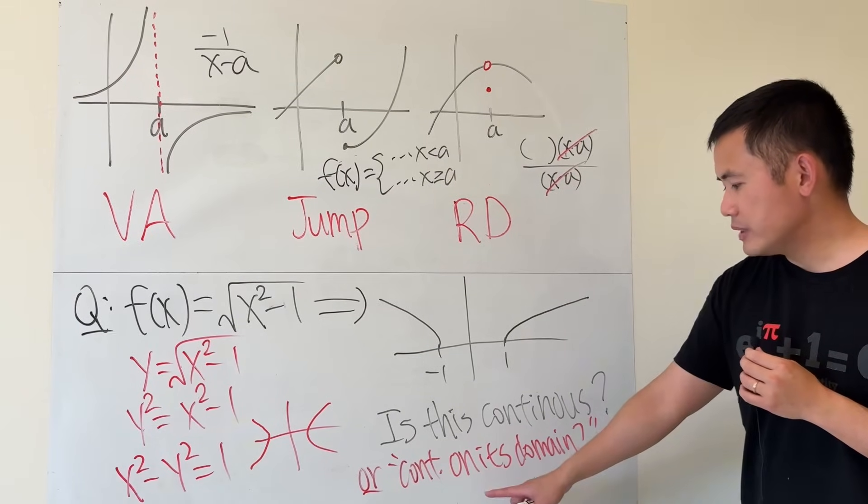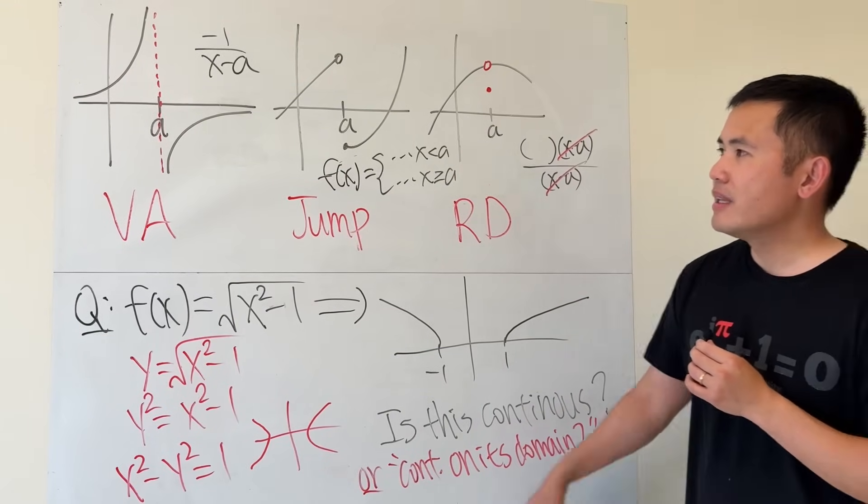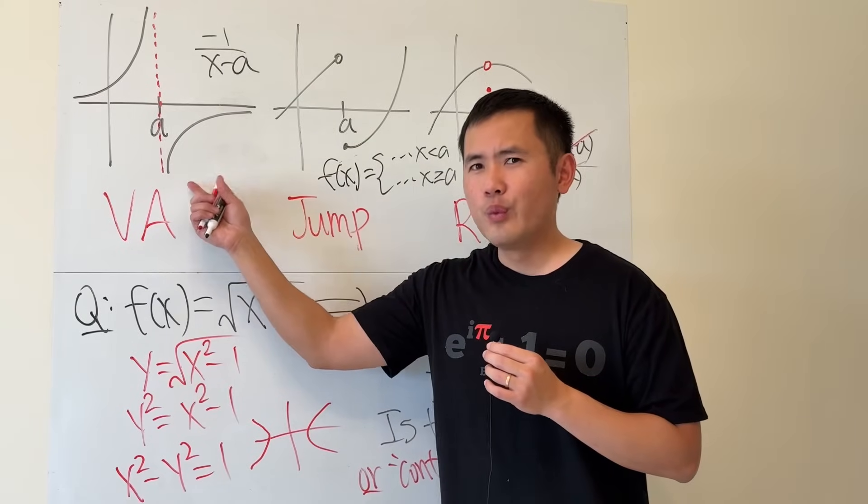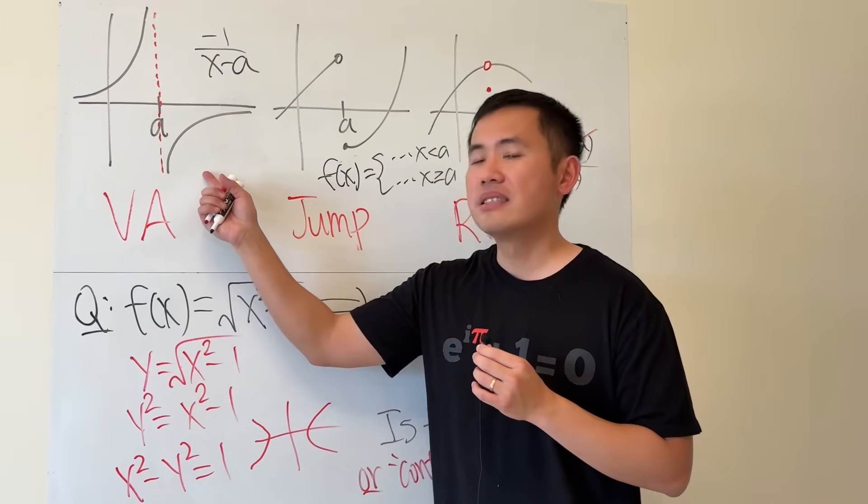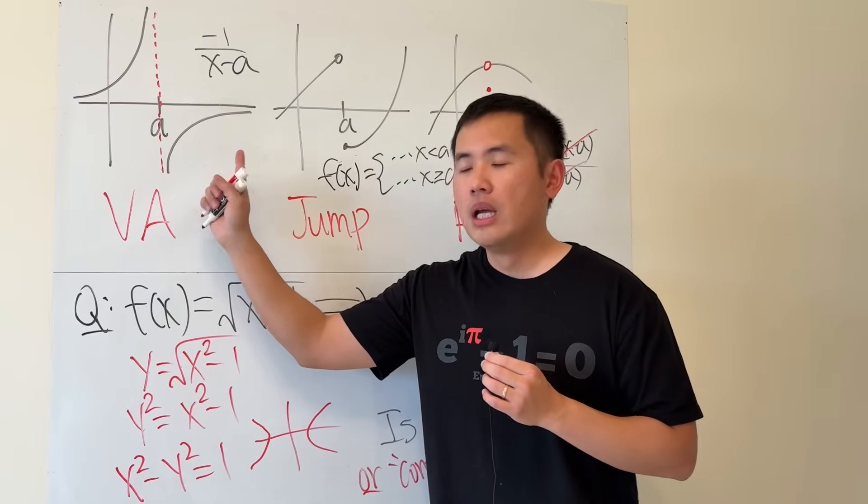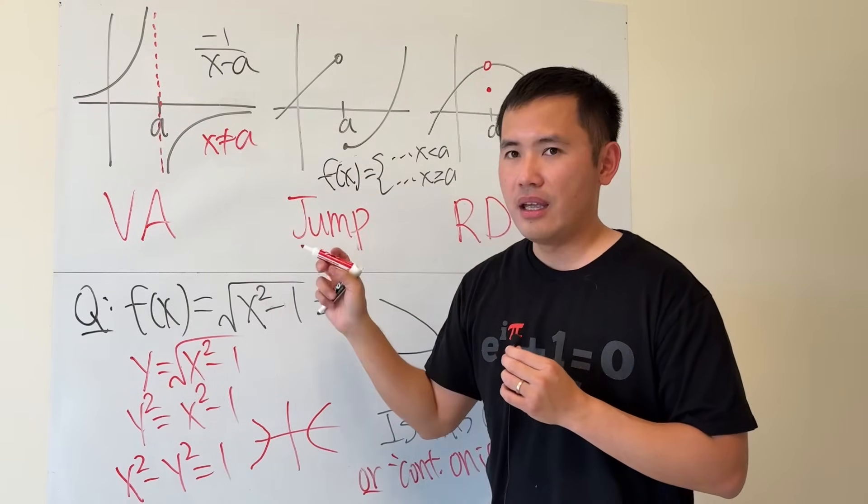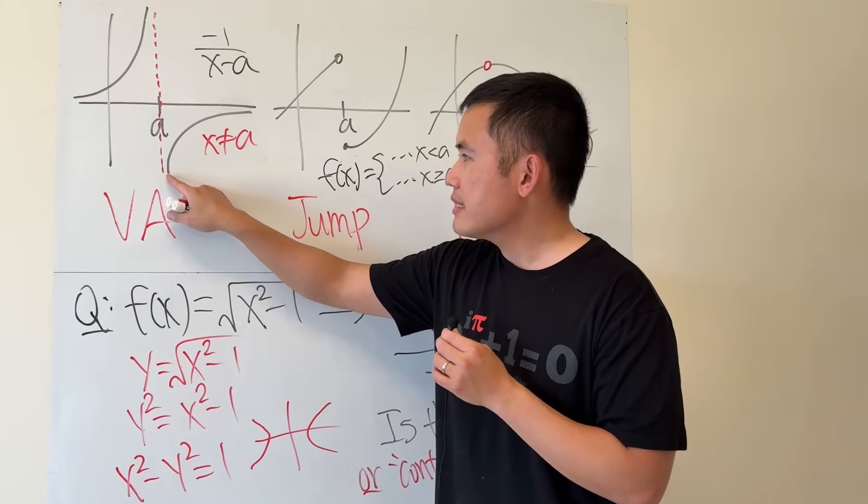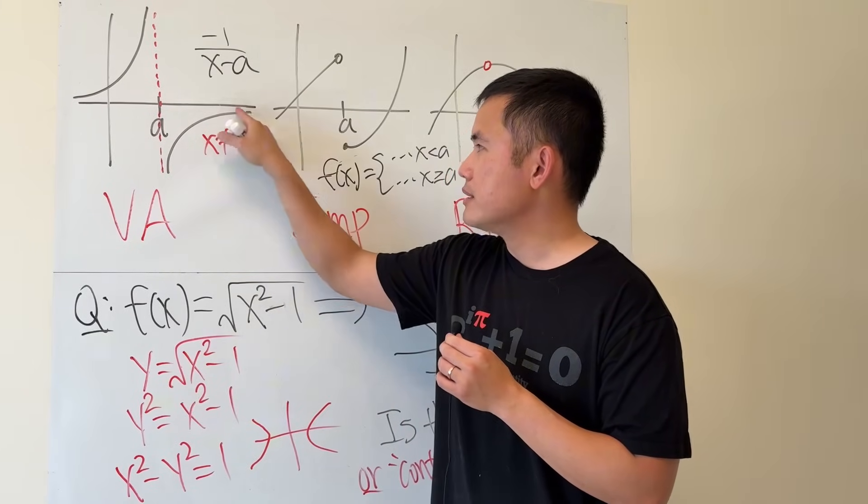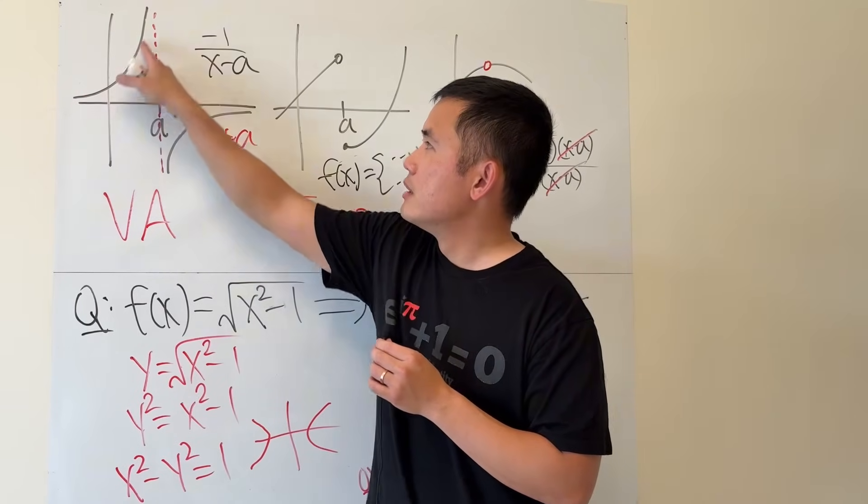But if you really want to say continuous on its domain, then for this one right here, we can't really say this is discontinuous anymore. Because the domain for this function is that x cannot be equal to a. So, as long as x is not equal to a, then the function right here is continuous. And the function is continuous.